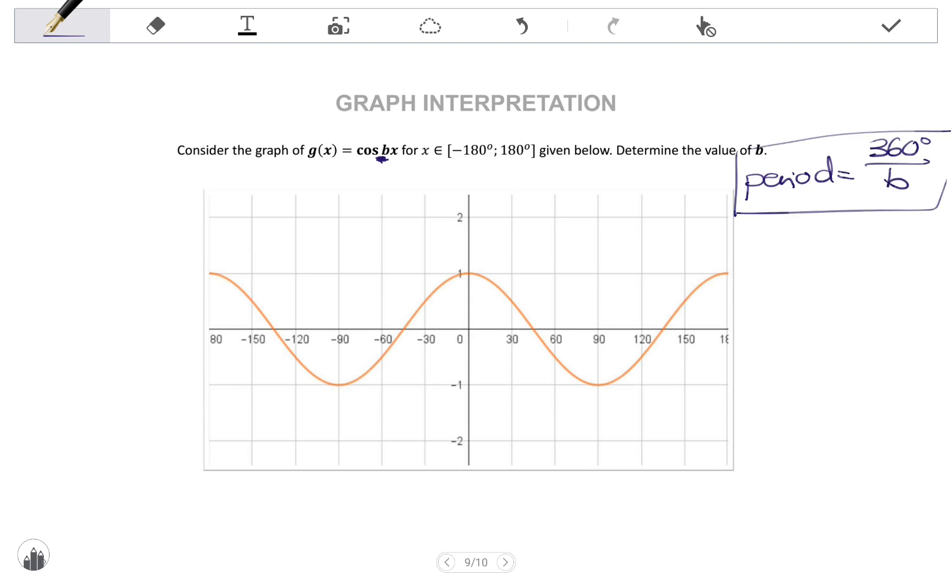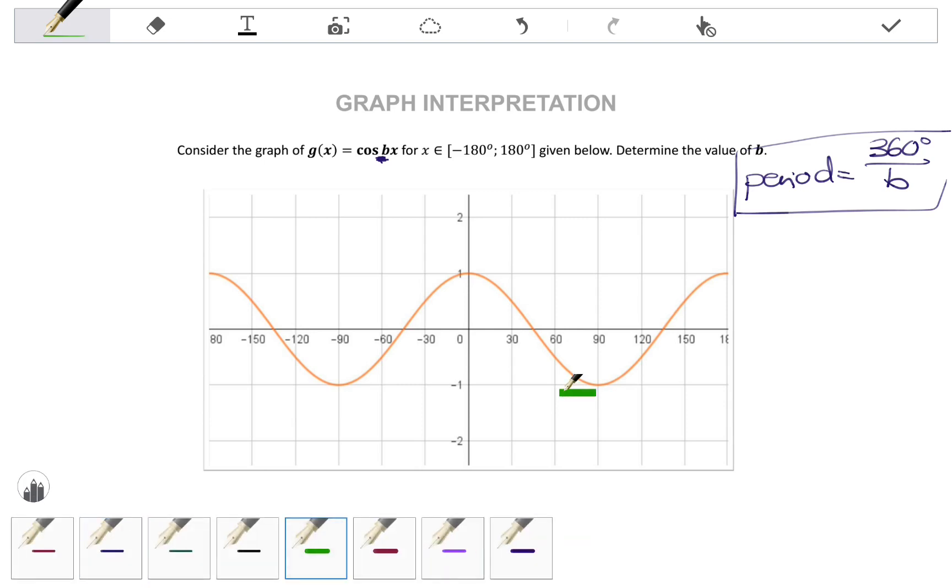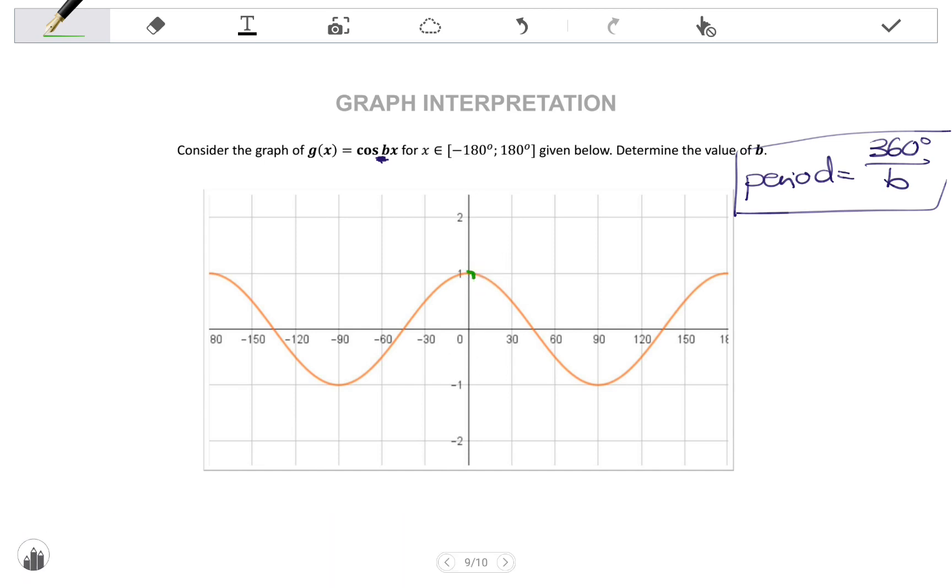Looking at the graph, to determine the period of the graph, we need to see how long it takes for the graph to complete a full mountain and a full valley. Now typically a cos graph, if we look at starting from the y-axis, we have half a hill, then we have a full valley, and then another half a hill to complete the hill and the valley. This covers a span or period of 180 degrees. So if the period of this graph is 180 degrees, what am I dividing by to get to 180 degrees? I'm dividing by 2. So that means b equals 2.